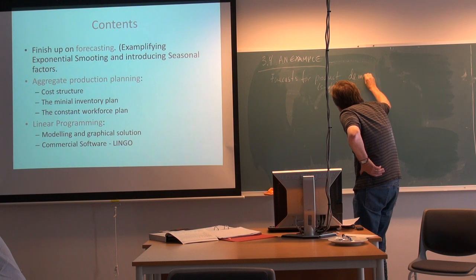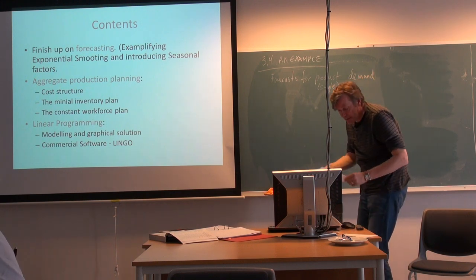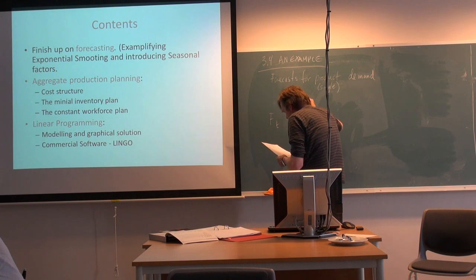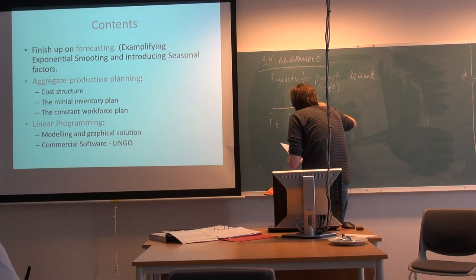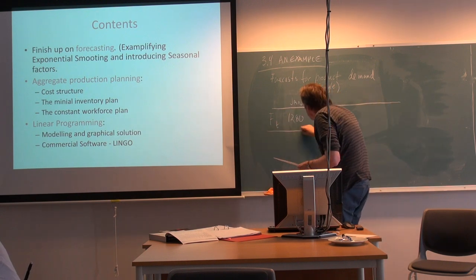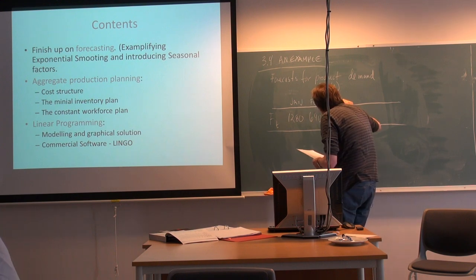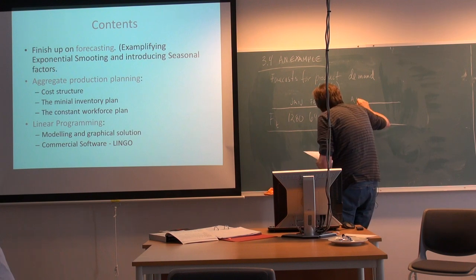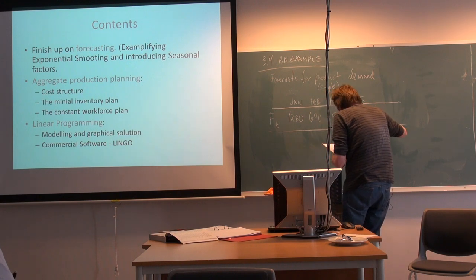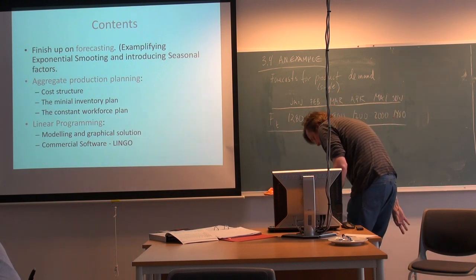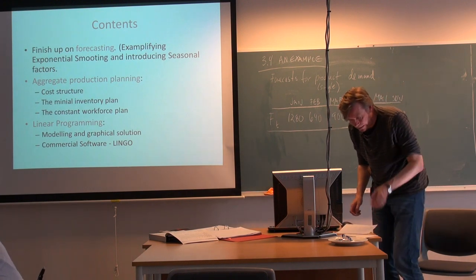We look at demand on a monthly basis. There is a forecast for January: 1280 units. February: 640. March: 900. April: 1200. May: 2000. And June: 1400. This is assumed given for this example.